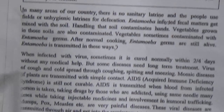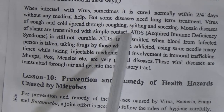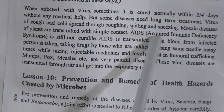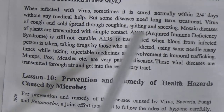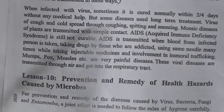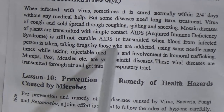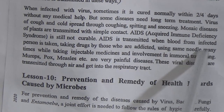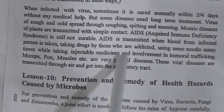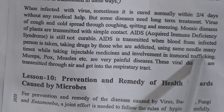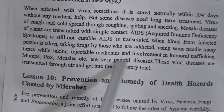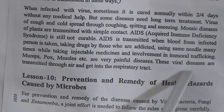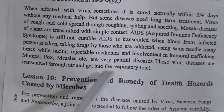Mosaic diseases of plants are transmitted through simple contact. AIDS (Acquired Immune Deficiency Syndrome) is still not curable. AIDS is transmitted when blood from an infected person is taken, through drug use with shared needles, through injectable medicines used multiple times, and through immoral trafficking. Mumps, pox, measles, etc. are very painful viral diseases transmitted through the air and entering the respiratory tract.